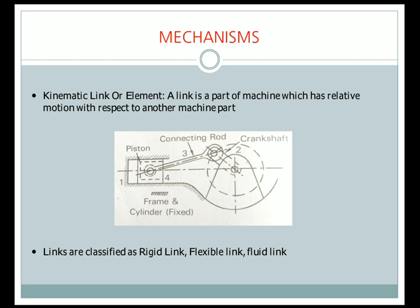The next type is the flexible link. In the case of a flexible link, the link deforms when motion is being transmitted — it gets partially deformed. Examples of flexible links are springs, chains, ropes, etc. They undergo deformation when motion is transmitted from one link to another.